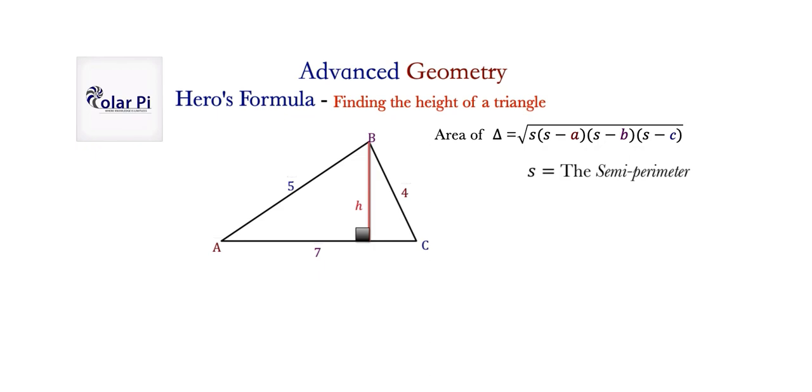So, in practice, what you do to find S is you add A, B, and C, the lengths of the three sides of the triangle, and then you divide them by two. And so, the semi-perimeter, half of the perimeter, that's S.